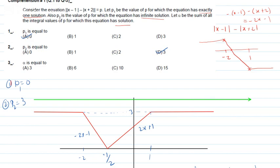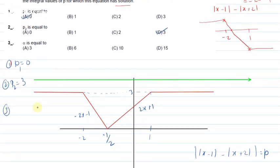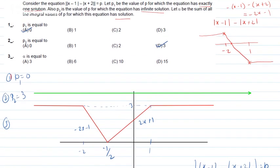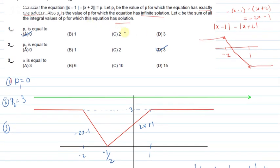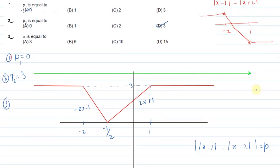Now for the third part: the sum of all integral values of p for which the equation has a solution. At p = 3 we have infinite solutions; at p = 2 the line cuts the graph giving solutions; at p = 1, solutions exist; at p = 0, one solution. Below 0 there are no solutions. So the integral values are 0, 1, 2, 3 and their sum is 0 + 1 + 2 + 3 = 6.